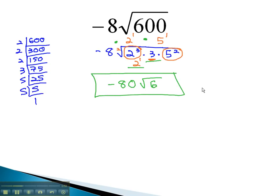Our final solution, simplified, is negative 80 times the square root of 6. Let's take a look at another example, where we pull some stuff out of the radical and multiply it by the coefficient.